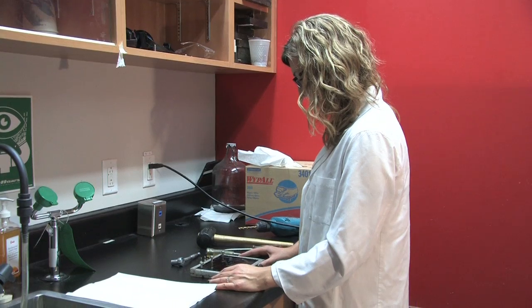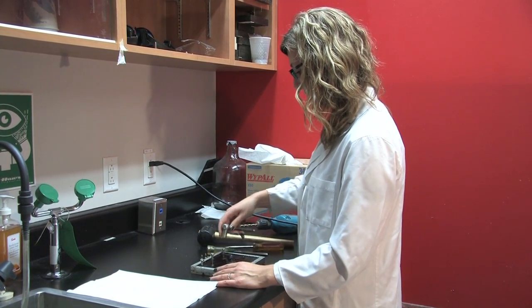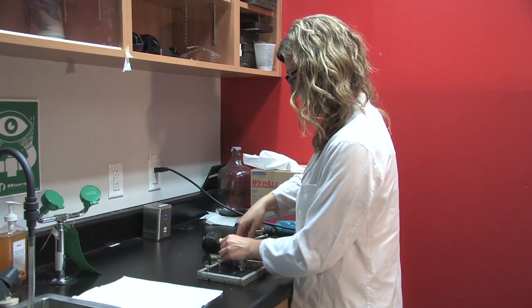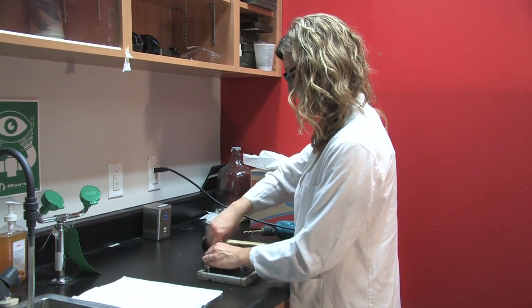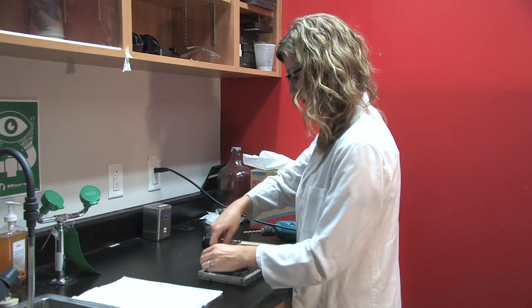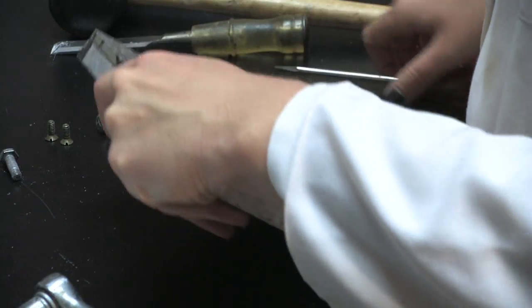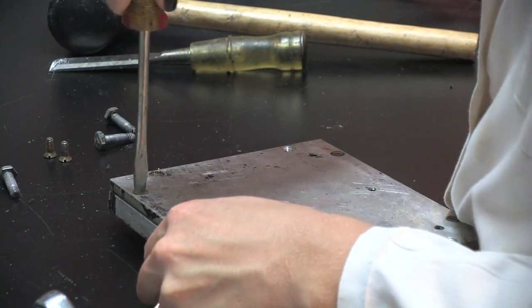Once the plates have hardened for 24 hours in a fume hood, they can be removed from the trays. You can start by undoing the bolts at the top of the trays. And you'll probably have to remove one of the sides of the trays as well. This is done by removing the screws on the bottom of the plate.